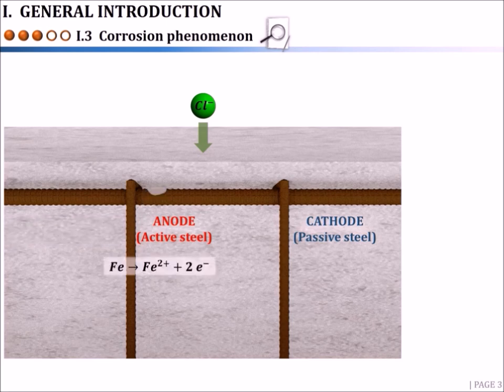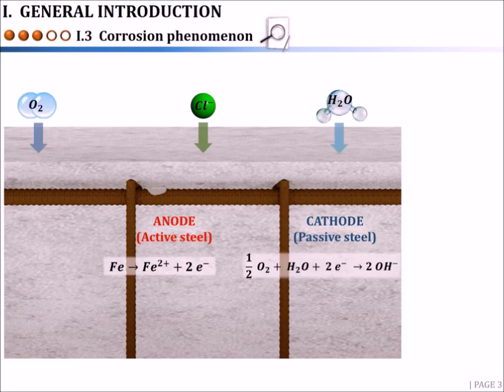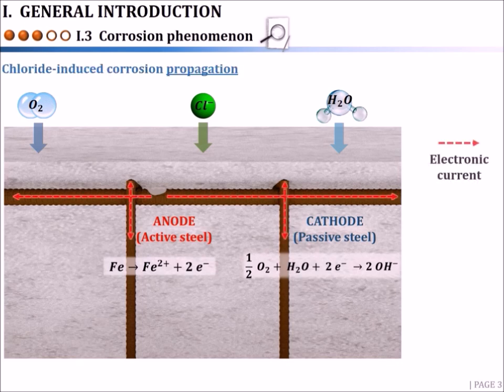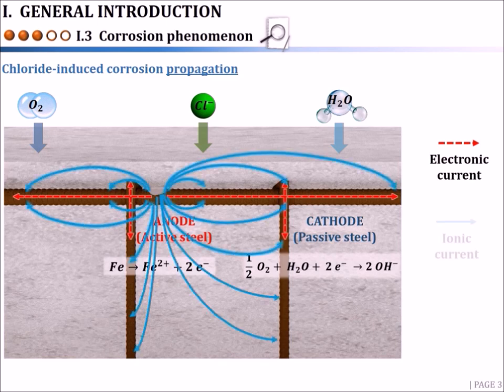Chloride-induced corrosion of steel in concrete is an electrochemical phenomenon involving two main reactions: the oxidation of iron at the anode, generating electrons needed for the reduction of dissolved oxygen when available at the cathode. As a result, an electronic current circulates through the metal since electrons are transported from the anode towards the cathode, and an ionic current flows through the concrete electrolyte, which is the interstitial solution of concrete.